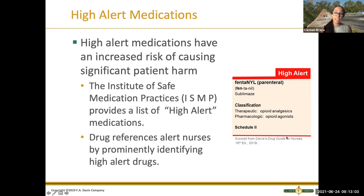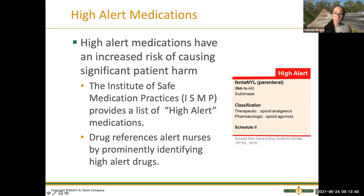Talking more about each of those individual awareness factors: high alert medications are any medications that have an increased risk for causing patient harm. If a medication could be harmful to the patient to the point of being life-threatening, it is a high alert medication. The ISMP provides a list of medications on their website. We always follow a drug guide book, and as you can see, this is exactly how it looks in the drug book — it tells you 'high alert.' This is fentanyl.